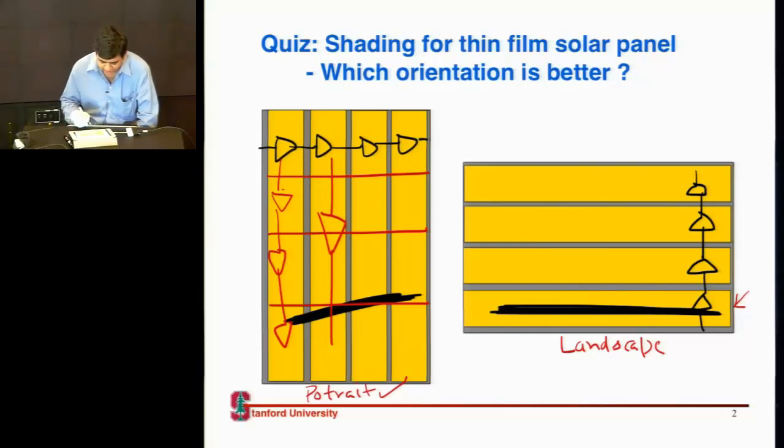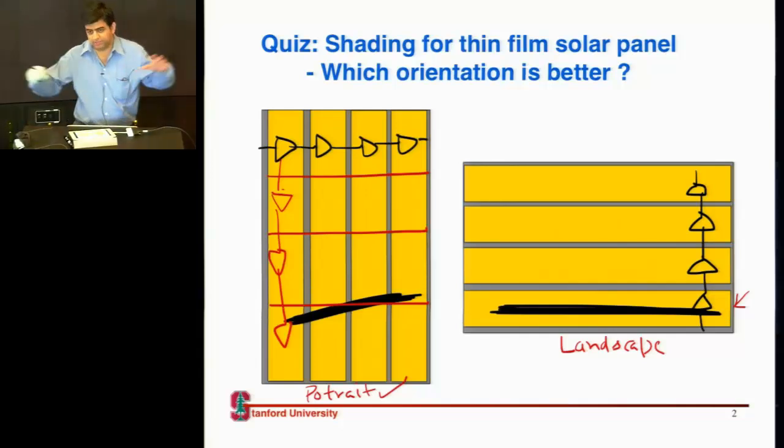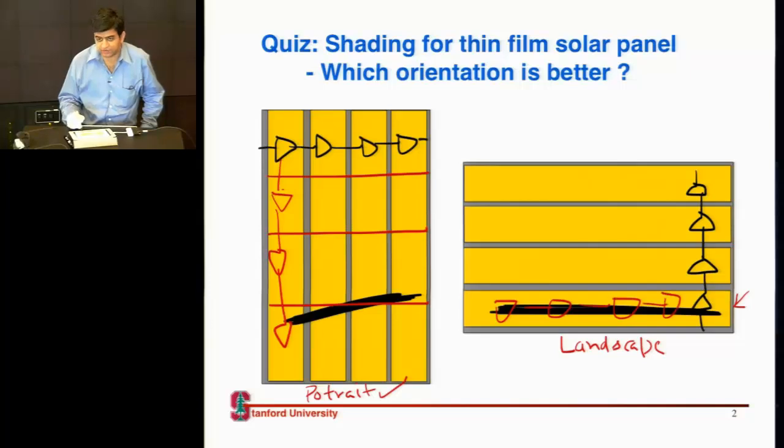Because in crystalline silicon, or in crystalline technology, you don't have this long cell. You have these individual cells which are series connected, as you hopefully are doing in your project, right? So each of them is a separate diode. Versus in this case, this whole big thing is one diode. Right? So that's the difference.